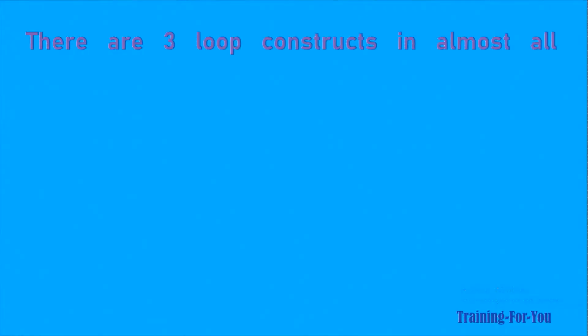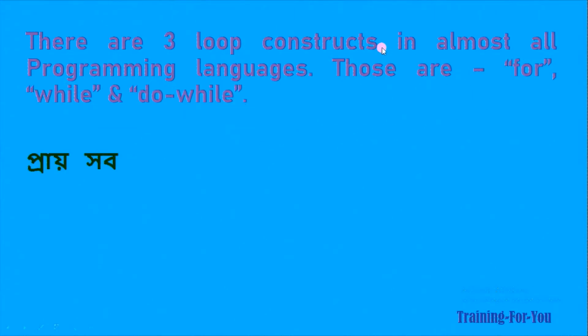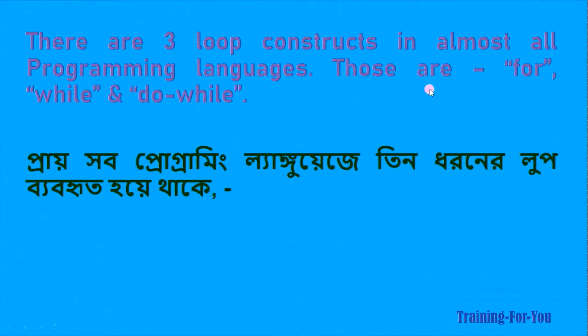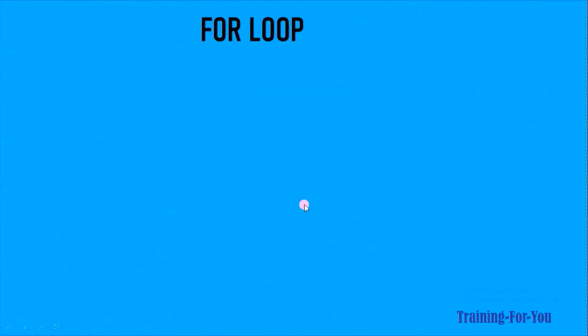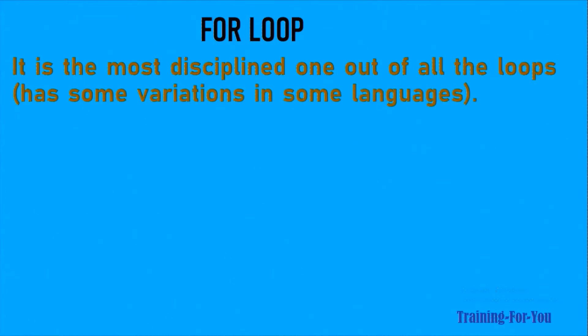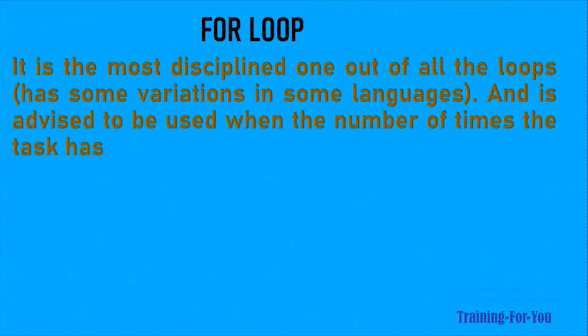There are three loop constructs in almost all programming languages: for, while, and do while. For loop is the most disciplined one out of all the loops. It has some variations in some languages and is advised to be used when the number of times the task has to be repeated is known.